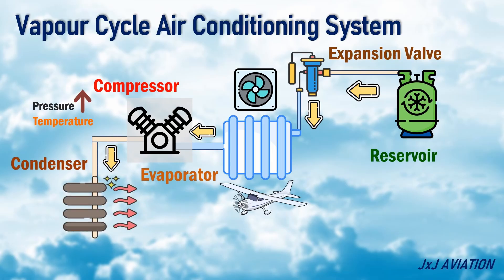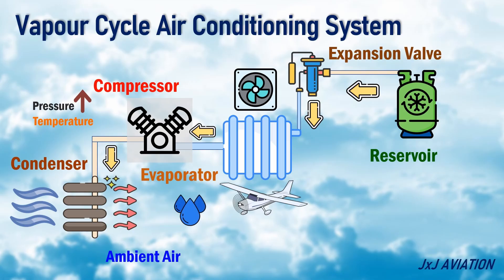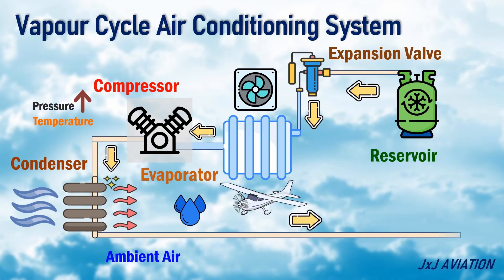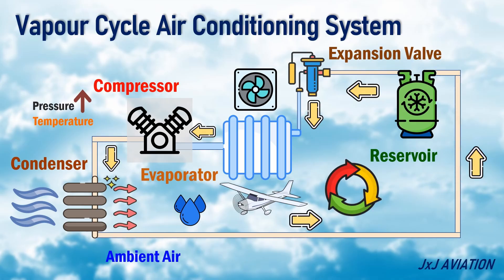This refrigerant now flows through a condenser, which is another radiator. Here, the cold outside air flows across the radiator. In this cycle, the heat is transferred from the refrigerant to the ambient air. The refrigerant cools down and changes back to liquid state and flows to the reservoir. This completes the closed-loop vapor cycle air conditioning system.